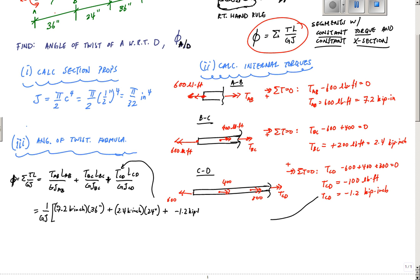For GJ, that's 1 over 11,000 KSI times pi over 32 inches to the fourth. The units are kip-inch squared. Running through the calculator, the angle of twist of A with respect to D ends up as 0.253 radians, as the units cancel out.